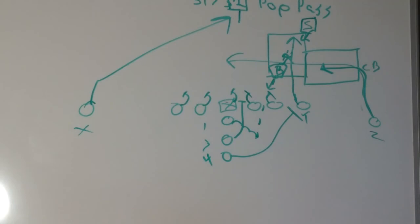Alright, so our first read is the linebacker. If he drops back, then we need to look for the vacancy he left right here with the end. So that is going to be our 31, 32 pop pass. It's just a little play action, quick hitter to take advantage and keep the defenses honest if we need to.